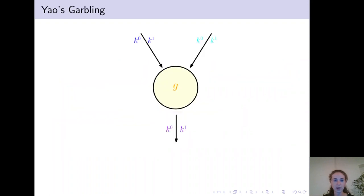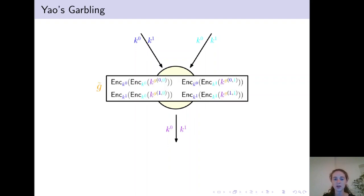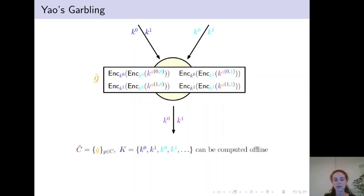Before discussing the proof, let's recall Yao's garbling scheme. To garble the circuit, Alice assigns a key pair for each wire in the circuit. And for each gate in the circuit, she computes double encryptions under all possible input combinations and assigns this gate a garbling table G tilde that contains these four ciphertexts in randomly permuted order. The garbling of the circuit then consists of all these garbling gates. And the secret key that Alice holds consists of all the input key pairs. Clearly, this can be computed offline and independently of the input.